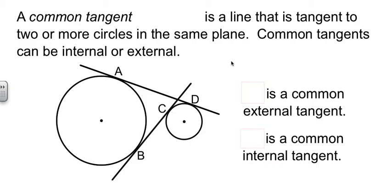The way you tell the difference between internal and external is whether or not the tangent line crosses the line connecting the two centers. So this tangent line BD does cross that, which would make it internal. And AD doesn't cross in between the two centers, so that would be an external common tangent.